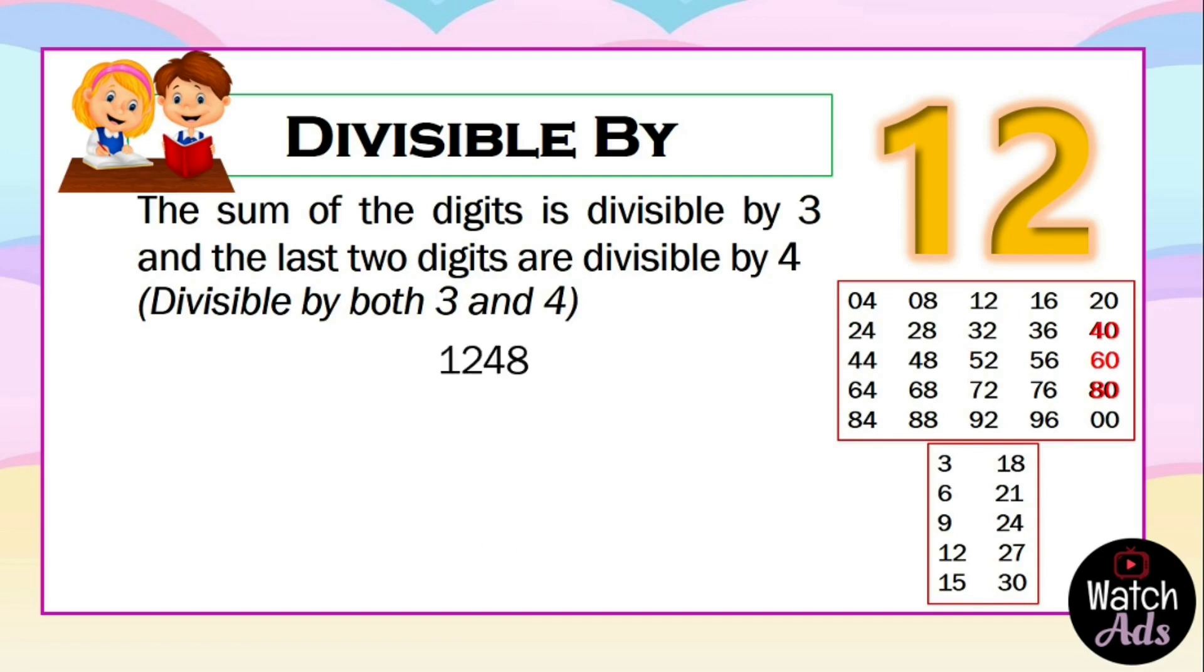Another example: 1248. The number is even, so we can proceed with test 1. Is it divisible by 3? We add all the digits: the answer is 15.